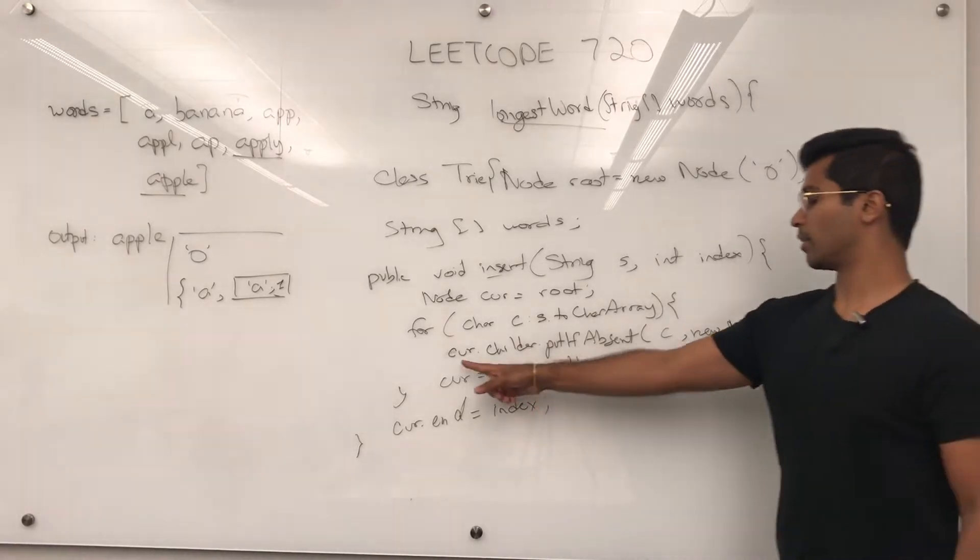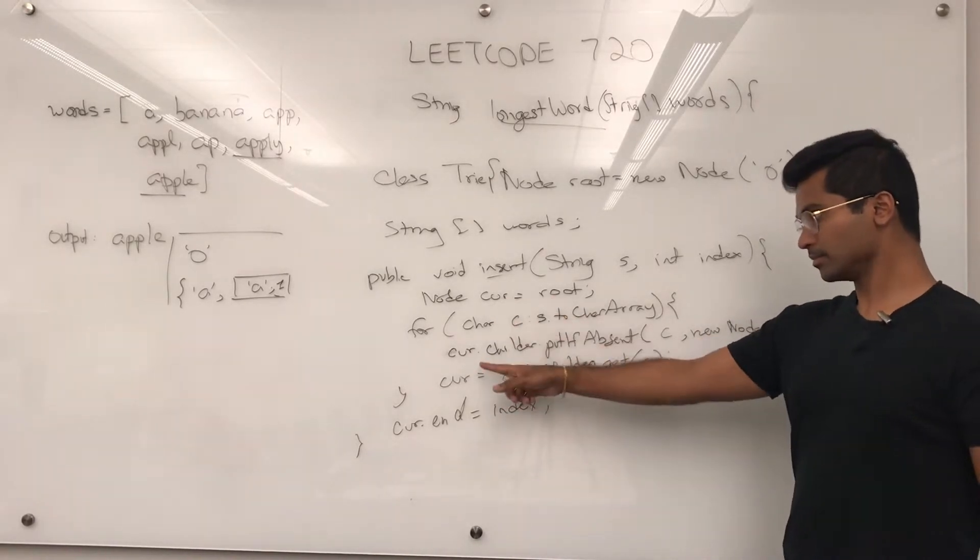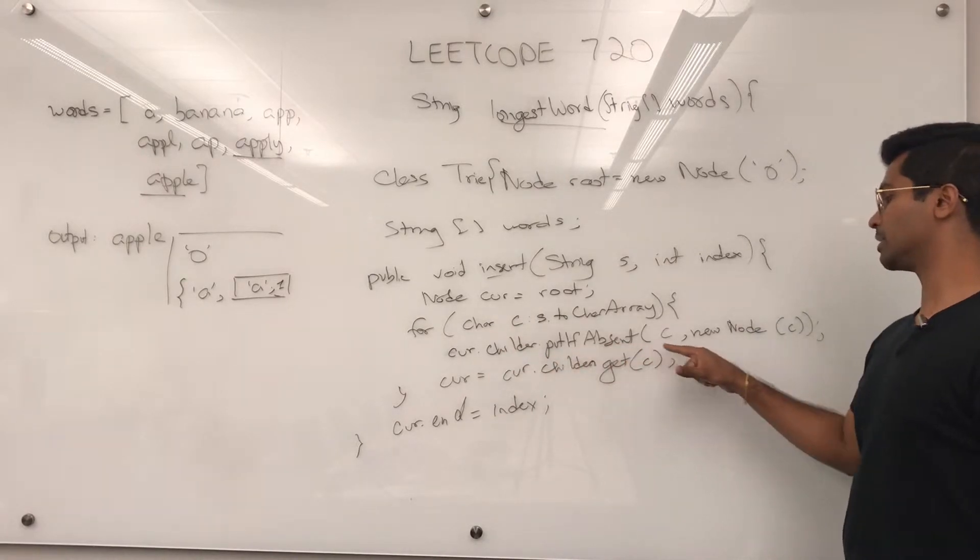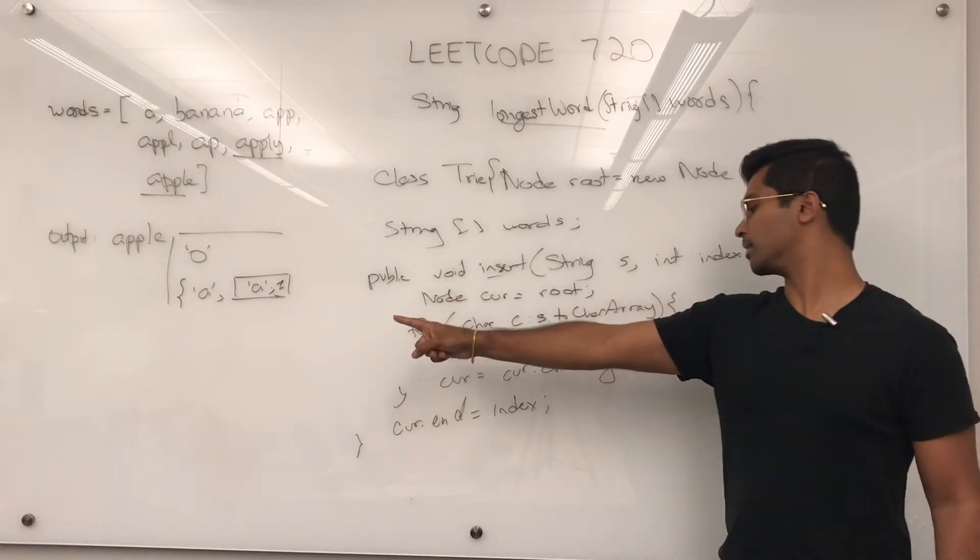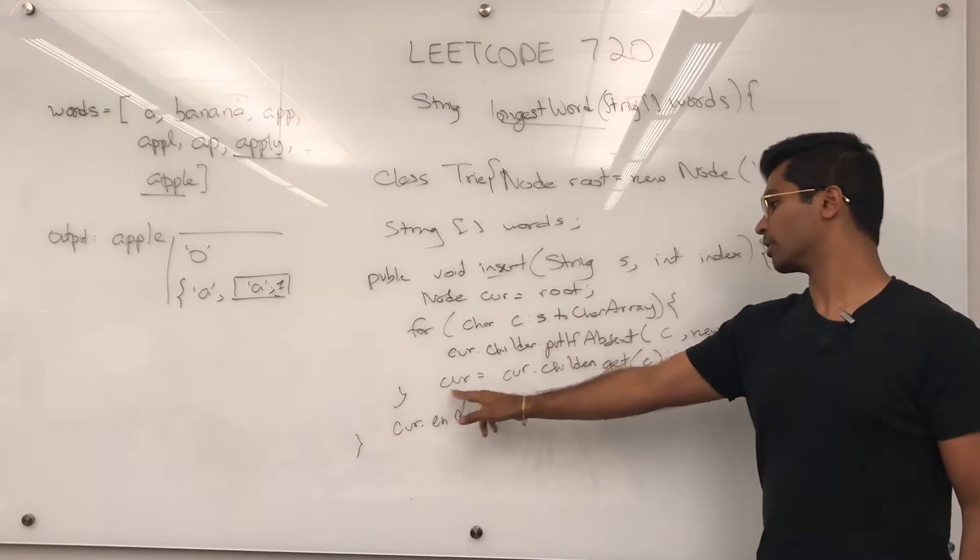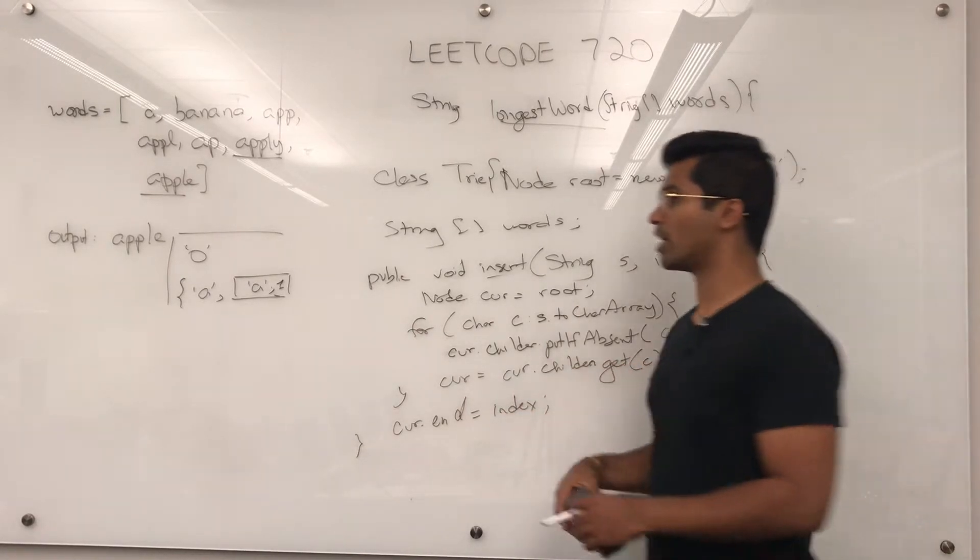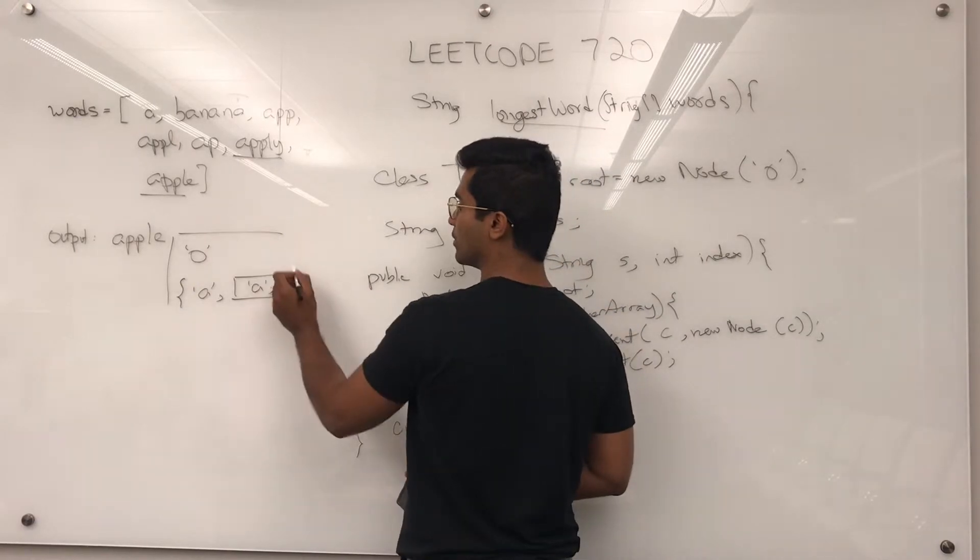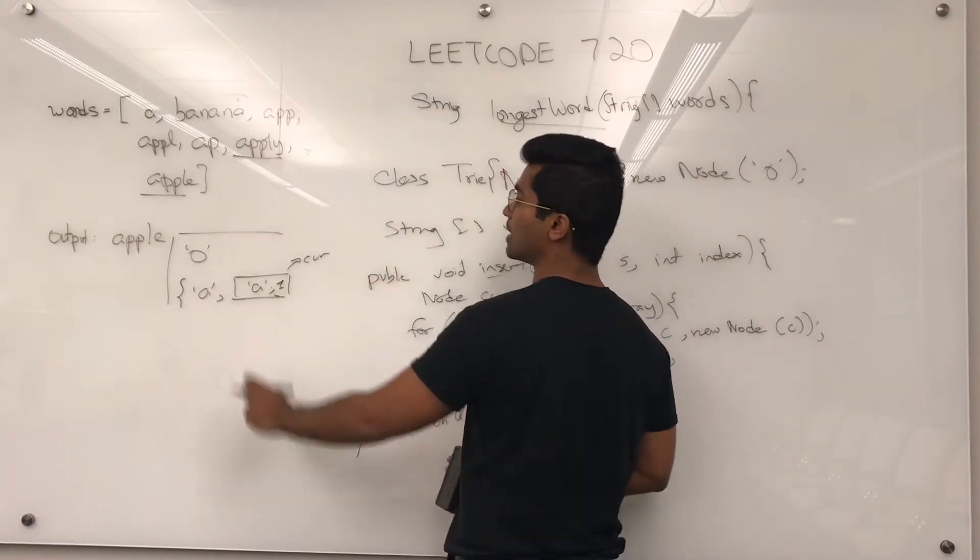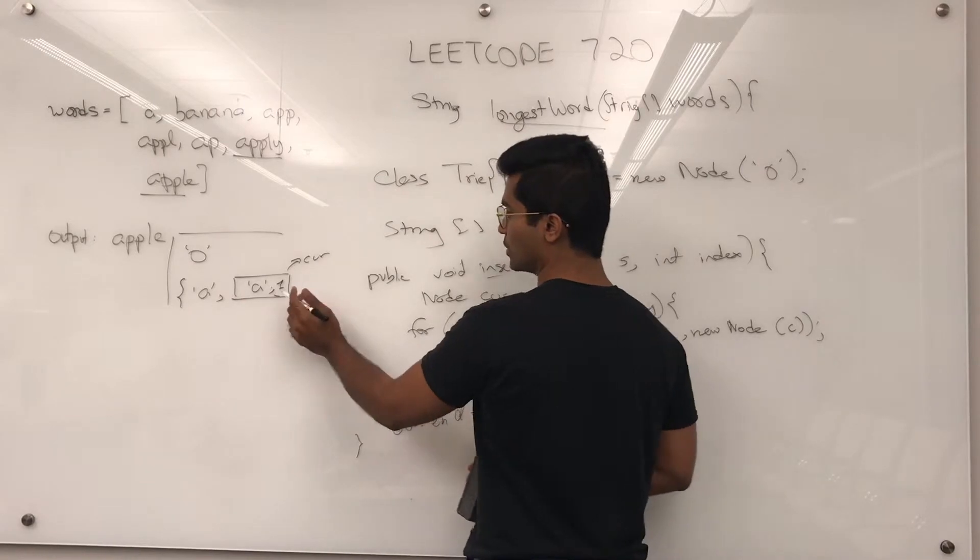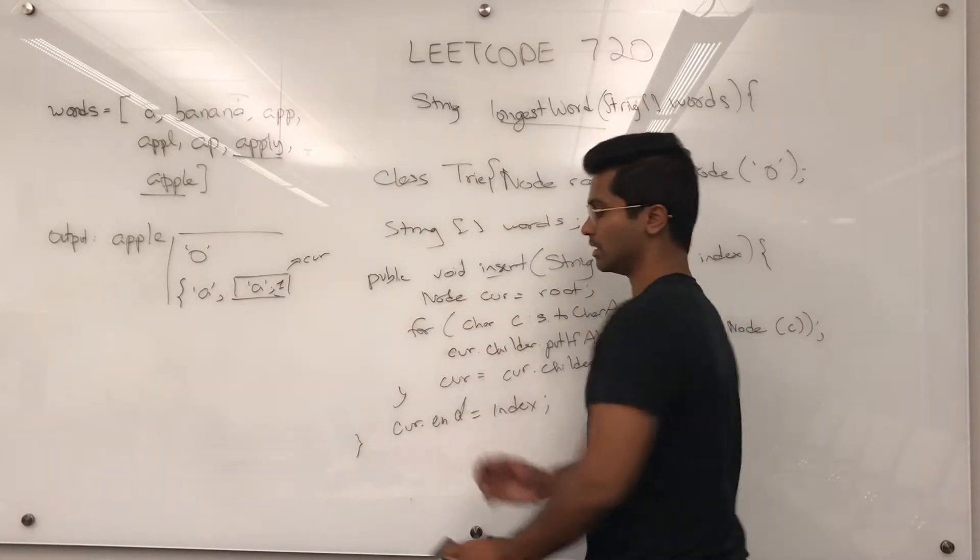So that's how we insert. Let's just double check. Cur.children.putIfAbsent C and a new node in there. And then cur is reassigned cur.children.get C. So now current would not be node, but it would be this guy. But we're done because A doesn't have anything else. So we just put one as the ending index.